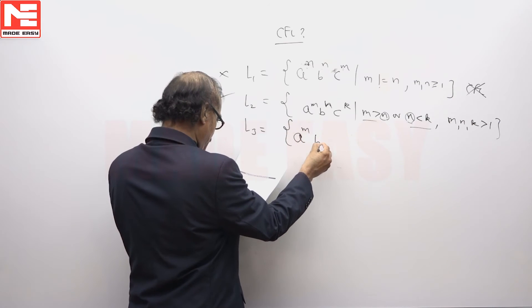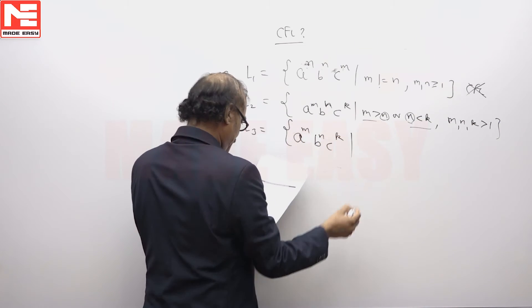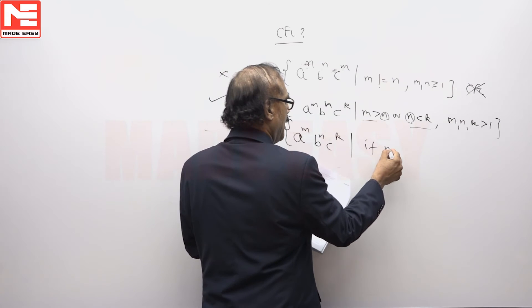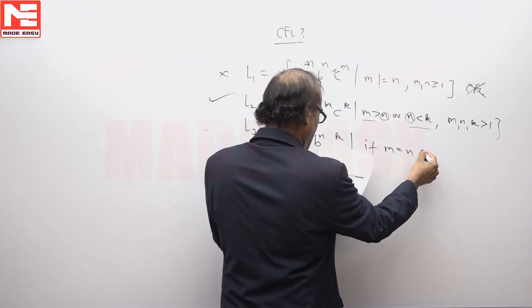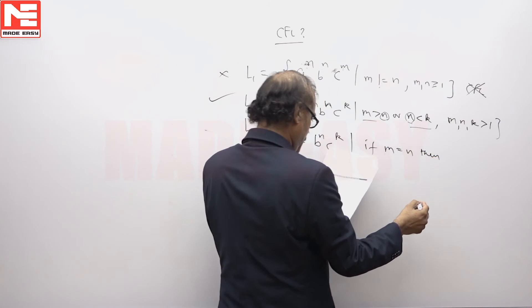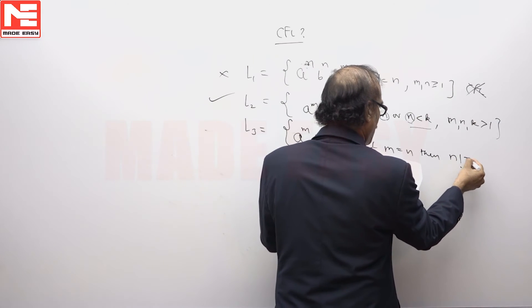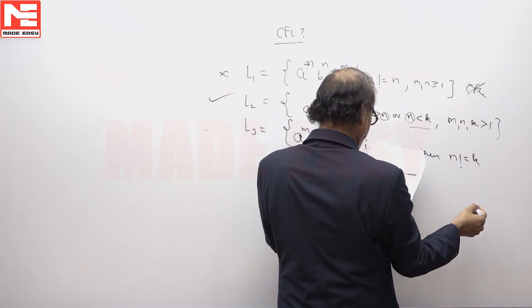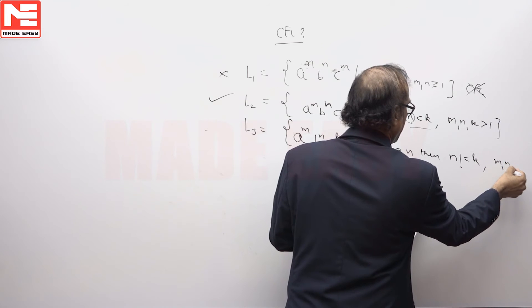Let us come to L3. L3 says a^m b^n c^k if m is equal to n then n not equal to k, again m and k are infinite.